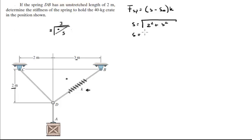S is equal to 3.61 meters, and the unstretched length S0 is equal to 2 meters. Therefore, the force of the spring is equal to (3.61 minus 2) times K, which is 1.61 times K.